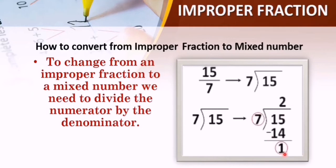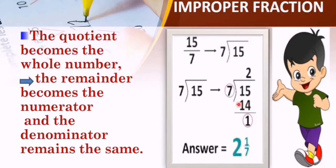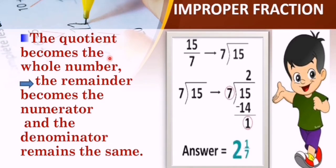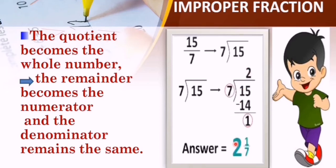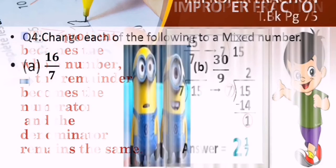The quotient becomes the whole number. The quotient is 2, so 2 becomes the whole number. The remainder becomes the numerator — the remainder is 1, so we write 1 at the place of the numerator. The denominator remains the same; we have denominator 7, so we write 7 again. This is how to convert an improper fraction to a mixed number.